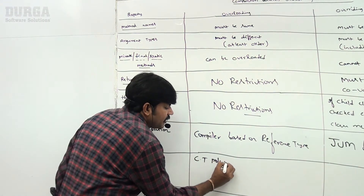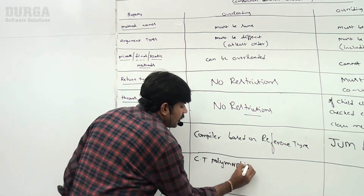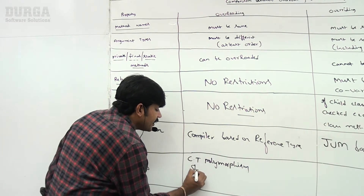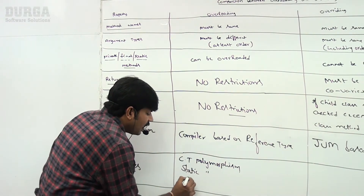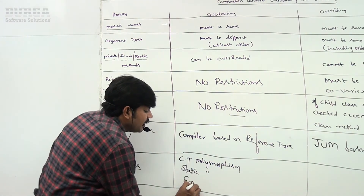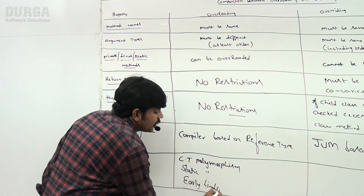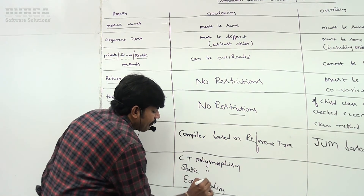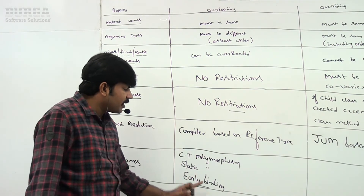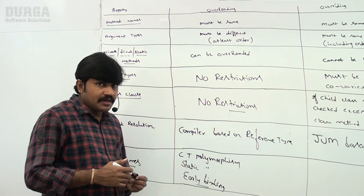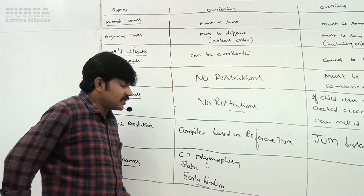That is why overloading is considered compile-time polymorphism, or static polymorphism, or early binding — because method binding happens at compile time only.